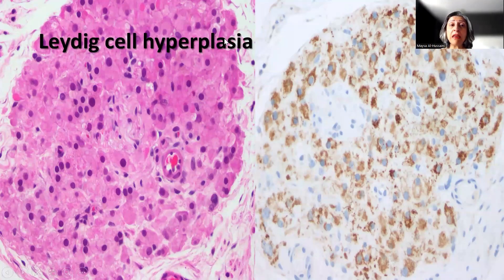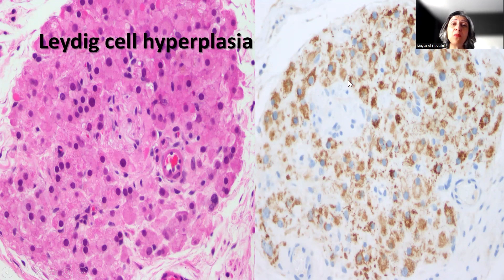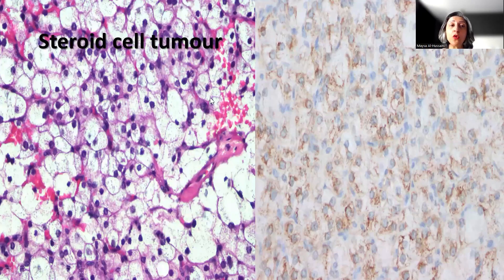Not only this, but in Leydig cell hyperplasia as well as Leydig cell tumors in the ovary — this has not yet been tested within the testicular parenchyma or tumors, this is only ovarian. Frequently in the hilum of the ovary, we encounter these aggregates of Leydig cells, and these beautifully show the cytoplasmic granular staining, which is very brisk and very characteristic, whether this is hyperplasia or a tumor.